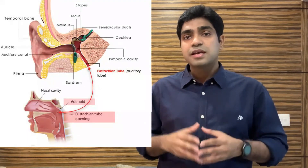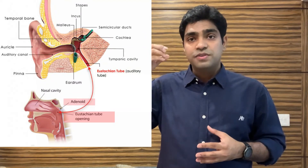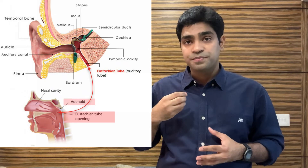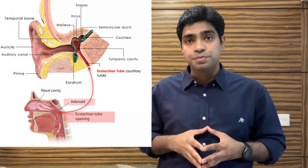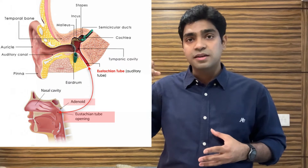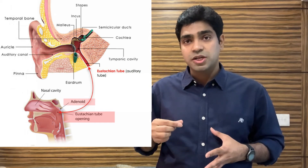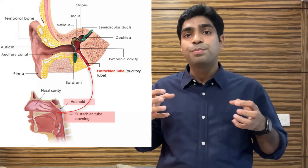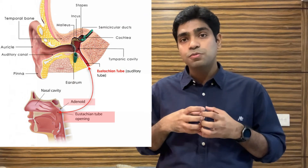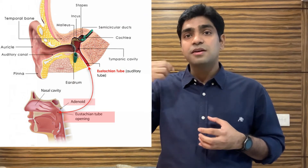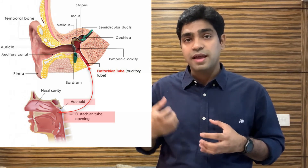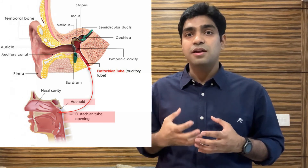Another problem is frequent ear infection. From the internal part of the ear, there is a communication to the throat through a tube called the Eustachian tube, and fluid generated in the ear drains to the throat and to the stomach through this tube. Enlarged adenoids tend to block the Eustachian tube, so fluid in the ear is not drained out, leading to frequent ear infection.